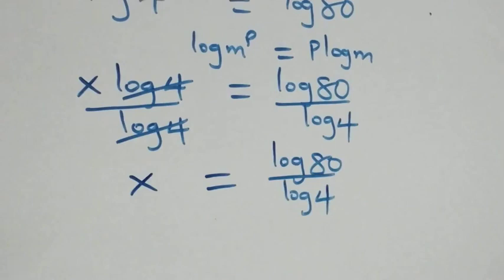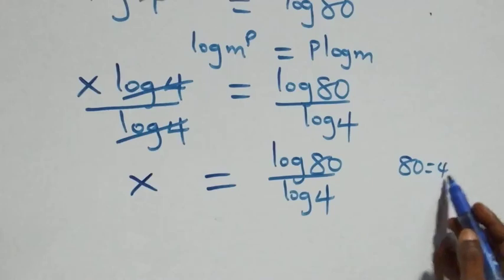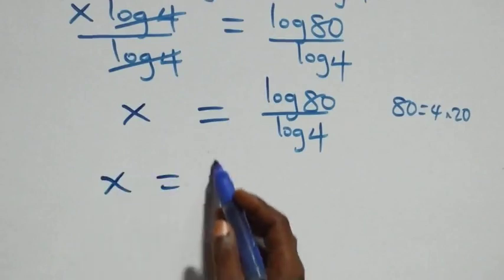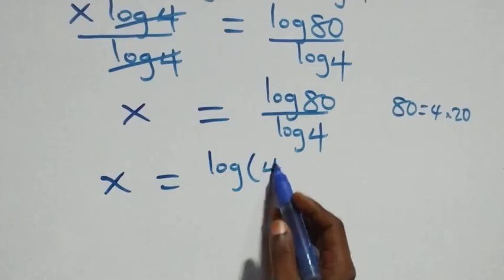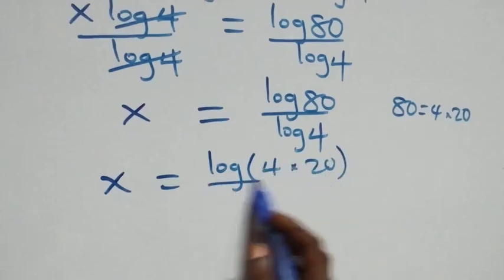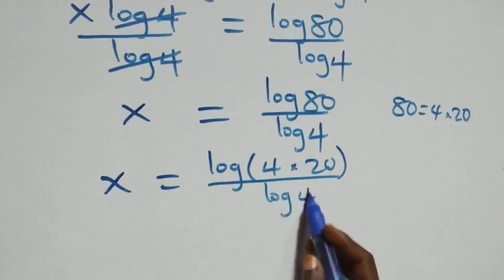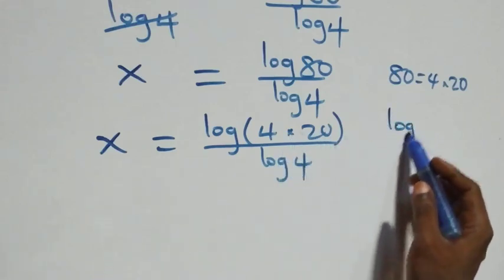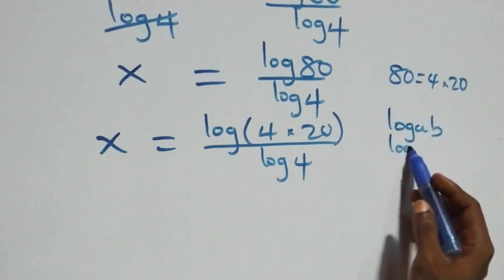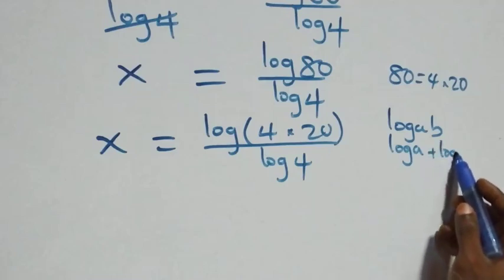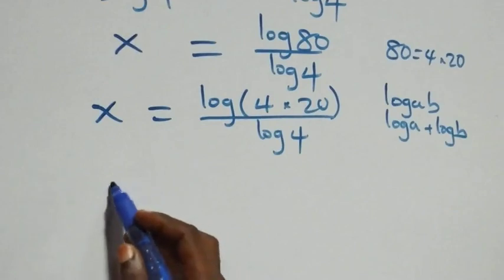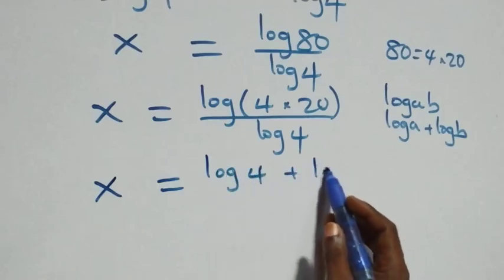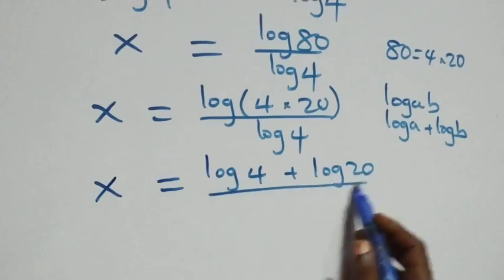Next, we express eighty as four times twenty, so x equals log of (four times twenty) over log four. Following the logarithm product rule, log(a times b) equals log a plus log b, so this becomes x equals (log four plus log twenty) over log four.